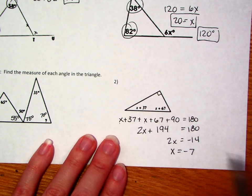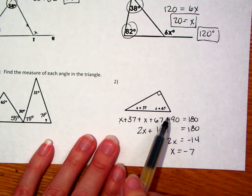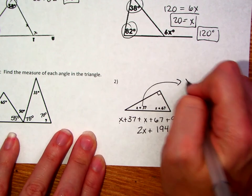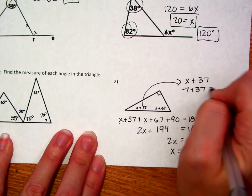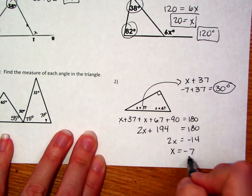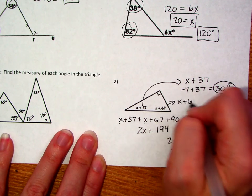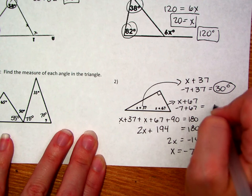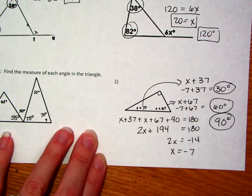Well, don't worry about the fact that x equals negative 7, because look, if we plug it back in, it still leaves my angles positive. So for this angle right here, the x plus 37, if x is negative 7, negative 7 plus 37 makes that angle measure 30 degrees. If we put the negative 7 in this one, right here, x plus 67, that is negative 7 plus 67, which gives it 60 degrees. And we already know that that last angle measure is 90 degrees.